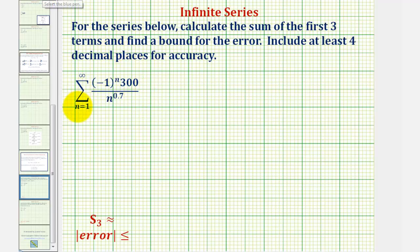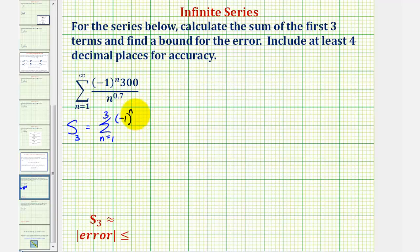So the partial sum S sub three is equal to the summation from N equals one to three of negative one raised to the power of N times 300 divided by N raised to the power of 0.7.